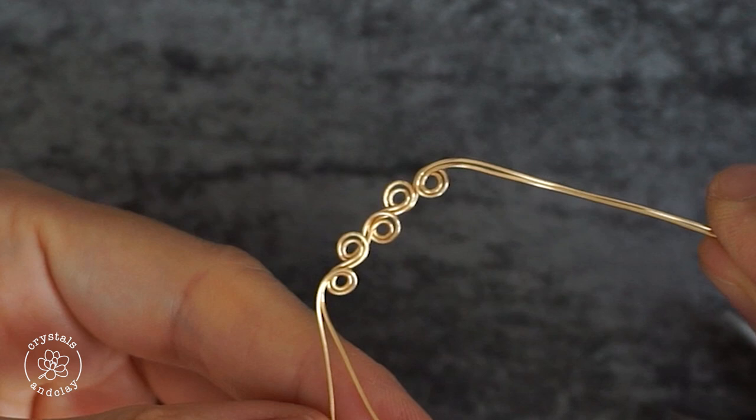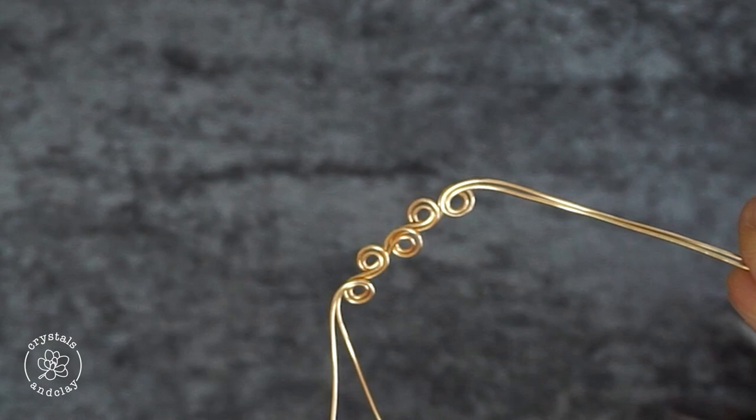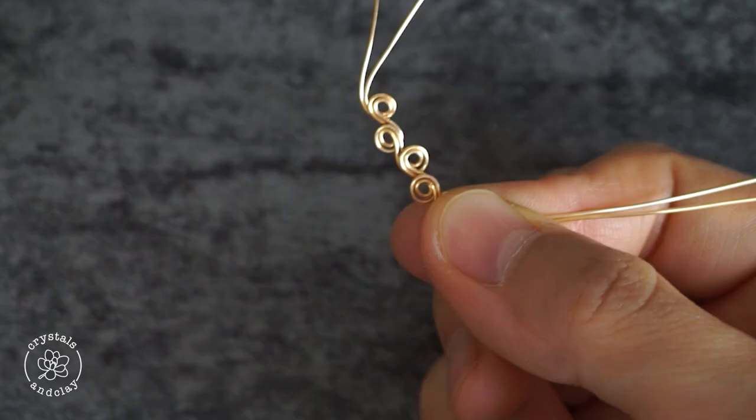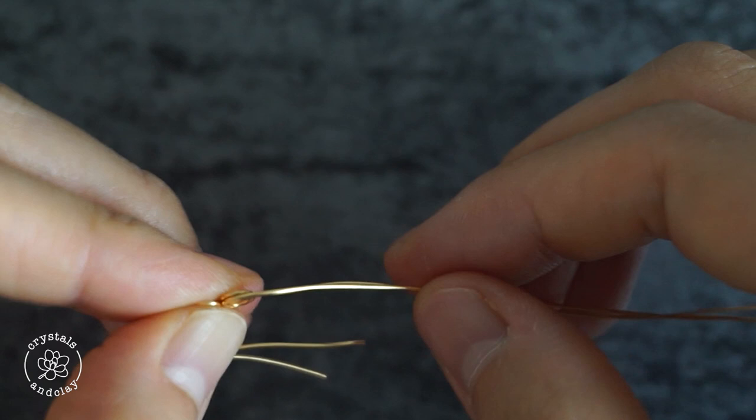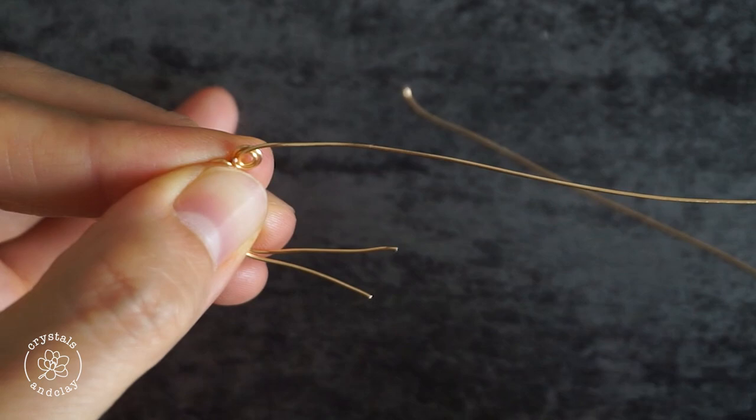Continue the same pattern until we get 5 consecutive loops. Since we are going to use it to embellish a round pearl bead, we need to curl the loops to match the shape of the bead. Cut one wire off. You can choose either one of them. We only need one wire from this point on.